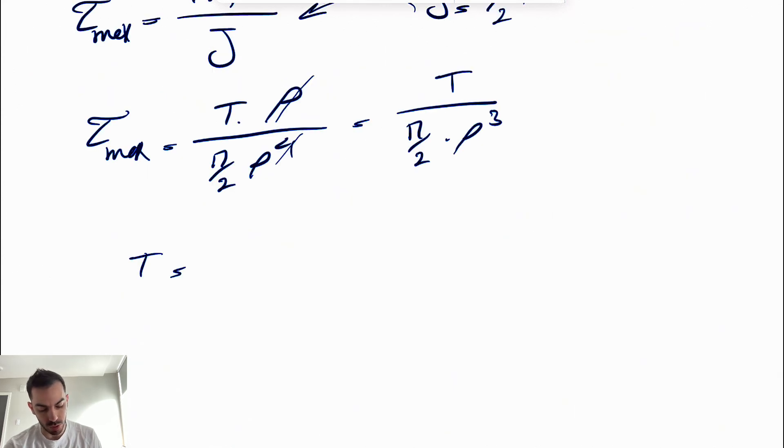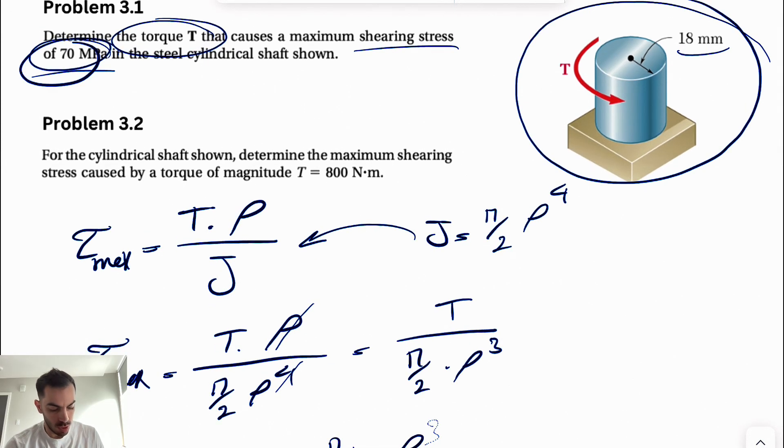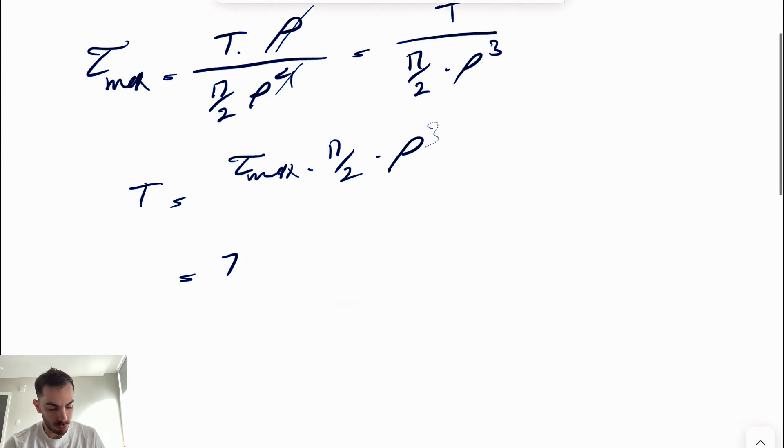The rest is just substituting all the givens. In the first question we're looking for T, so T equals the maximum shearing stress times π/2·ρ³. We have a maximum shearing stress of 70 megapascals, so 70 × 10⁶ pascals.